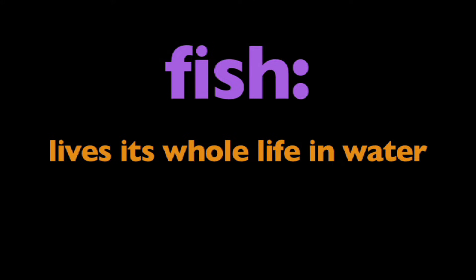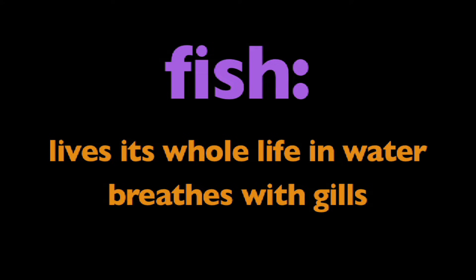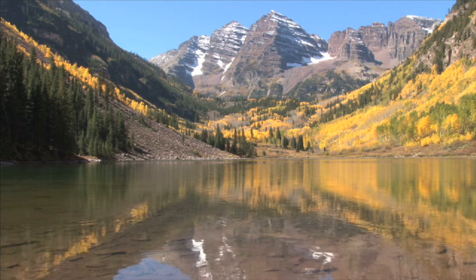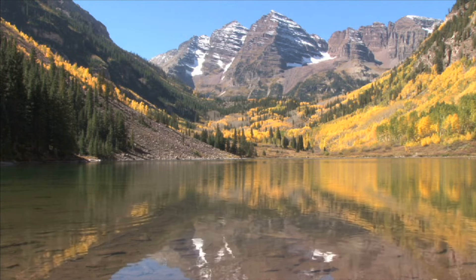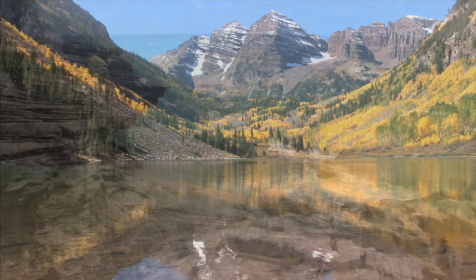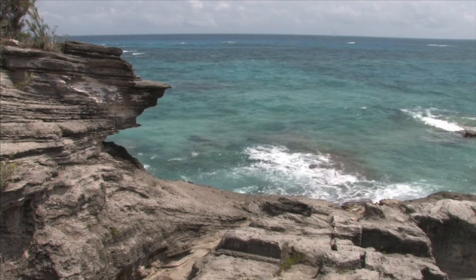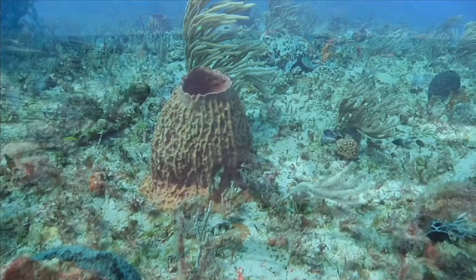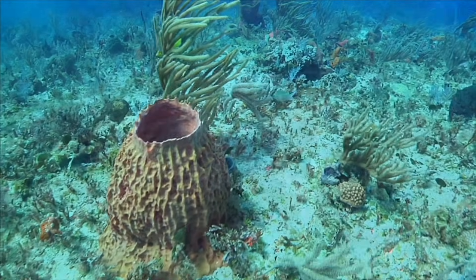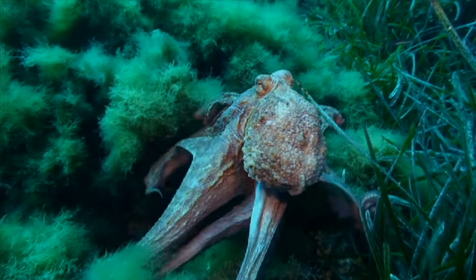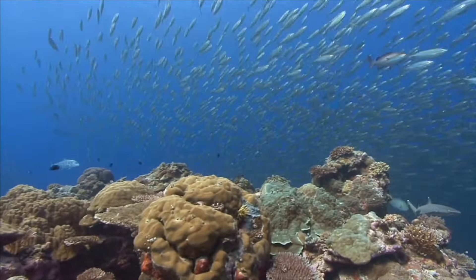In this program we're going to learn about fish. What are fish? A fish is an animal that lives its whole life in water and breathes with gills. Fish live in freshwater habitats like lakes and rivers. Fish also live in the ocean. Many different types of plants and animals live in the world's oceans, but fish are the most numerous.